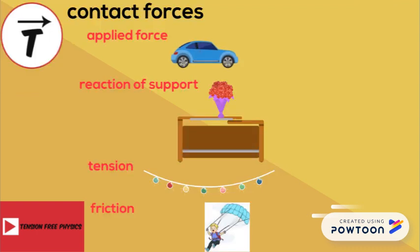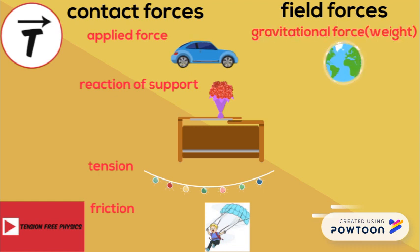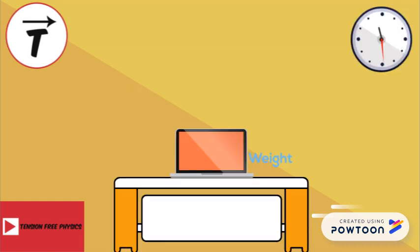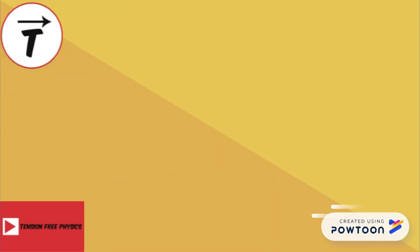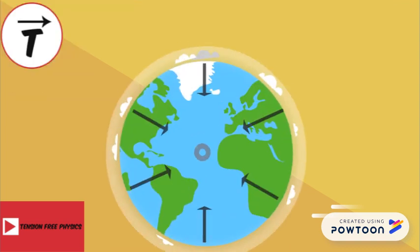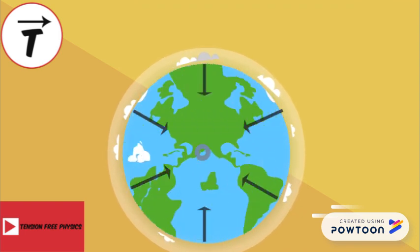We're done with contact forces. Let's jump to field forces. We begin with the weight. Weight is the force of attraction exerted by Earth on objects. It starts from the center of mass of the object and is directed vertically downwards — meaning it points towards the center of the Earth.